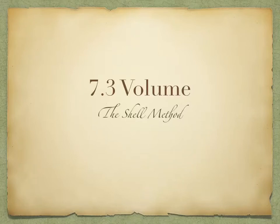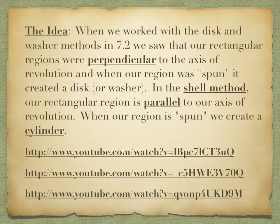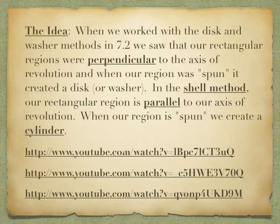Today we're going to take a look at another method for finding volume. This is called the shell method. When we worked with the disk and washer methods, those regions were perpendicular to the x-axis. When we spun the region around whatever axis or line we were referring to, we ended up getting a disk or washer.